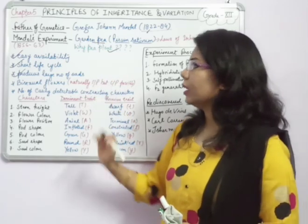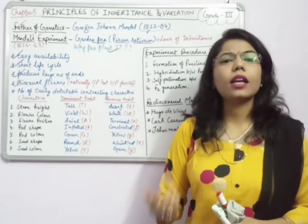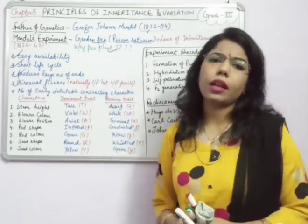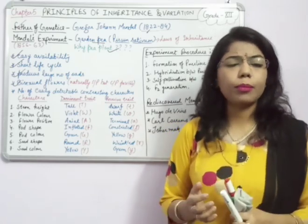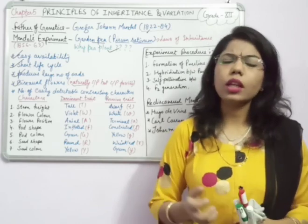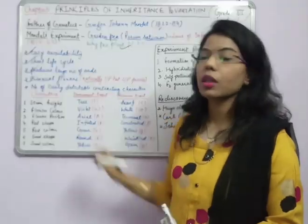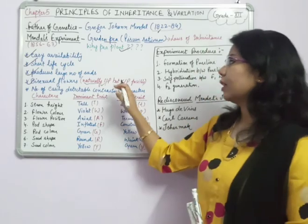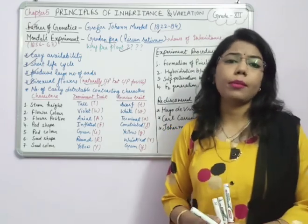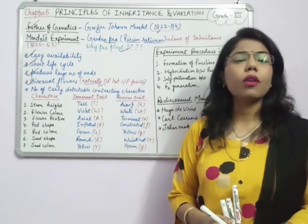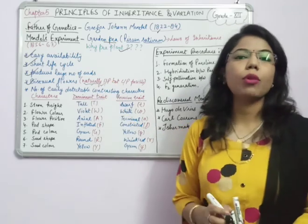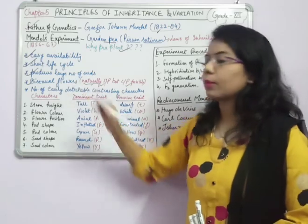Another advantage is that pea produces a large number of seeds — on average 4 to 5 per pod. More seeds mean a larger sample size, which increases statistical reliability. Also, pea has a bisexual or hermaphrodite flower, meaning both male and female reproductive parts are on the same flower, making it naturally self-pollinated. Cross-pollination can also be achieved artificially using emasculation — removing the anther so the flower becomes female.